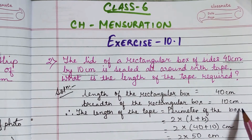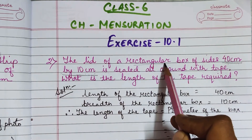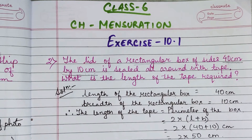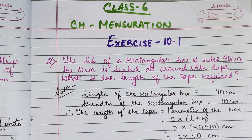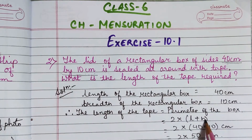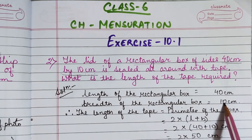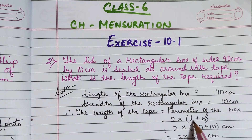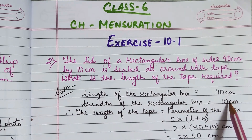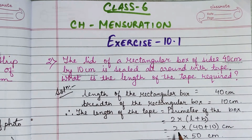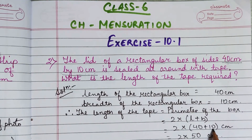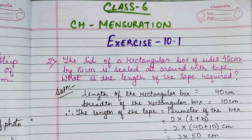The box is of rectangular shape and in the previous video we learned that to find the perimeter of a rectangular shape, we have a defined formula that is 2 into (length plus breadth). Here, length is 40 cm and breadth is 10 cm, so in place of length and breadth we will write 40 and 10. We get 2 into (40 plus 10), which is equal to 2 into 50 cm.